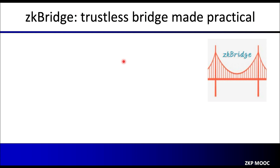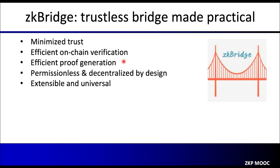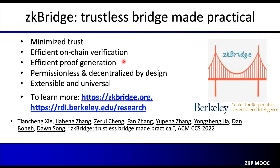To summarize, ZK Bridge provides a practical approach for building trustless and truly permissionless bridges. It relies on minimized trust, enables efficient on-chain verification, is permissionless and decentralized by design, and is fully extensible and designed to be universal. For more information, you can check out our ZK Bridge paper and research blog on zkbridge.org and the Berkeley RDI research website.